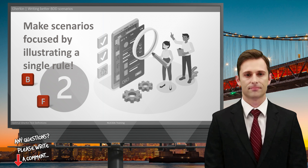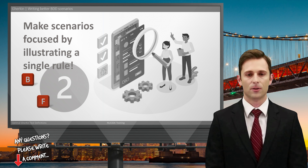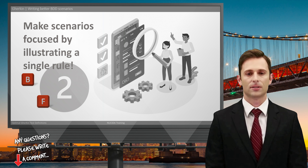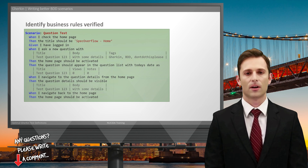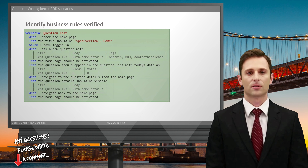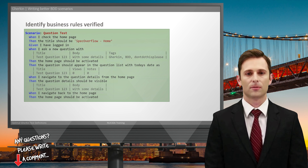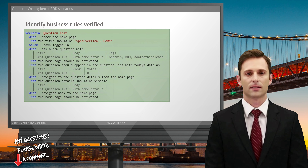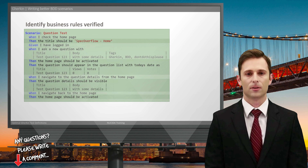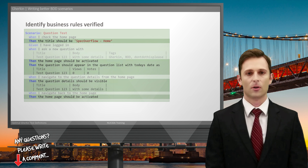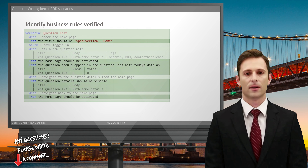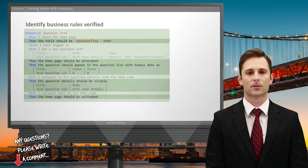Let's go to the second step, which is the letter F — here we try to make the scenarios Focused by illustrating a single rule. Whenever I say a rule, what I mean is: right now if you look at this scenario it's very hard to see what our overall purpose was. Even reading the title 'question test' doesn't really say anything. Typically the 'then' steps are the ones which identify the verification elements of the scenario. However if you look at the 'then' steps in this example, there are a couple of them spread across the entire scenario in different places.